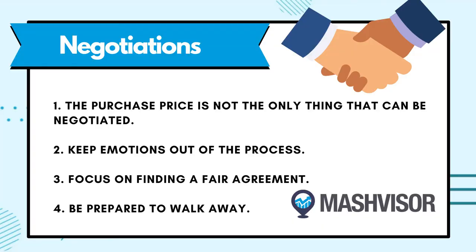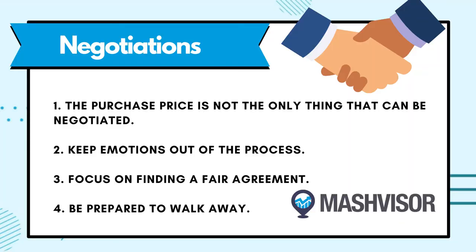Number three, focus on finding a fair agreement. The goal of a negotiation is to find an agreement that's fair to both parties — try to find middle ground and avoid anything that would leave either party feeling like they got the short end of the stick. And number four, be prepared to walk away. Sometimes the best thing you can do in a negotiation is to conclude it early. If you're not getting what you want and the other party isn't budging, it may be better to end the negotiation altogether and look at another property. A property is just a property — and there's always more real estate to buy.